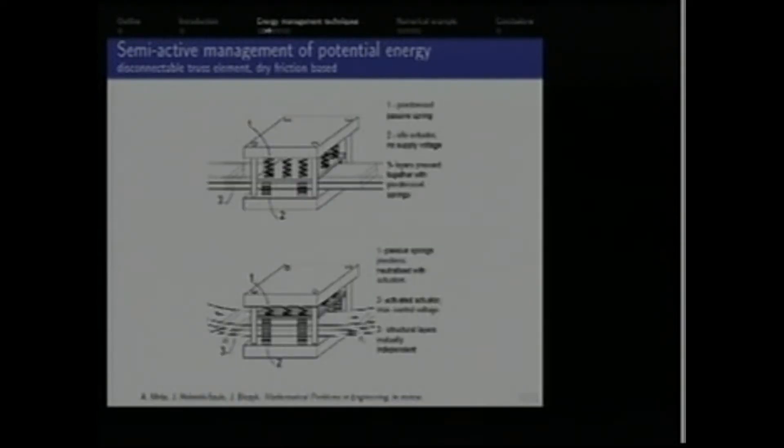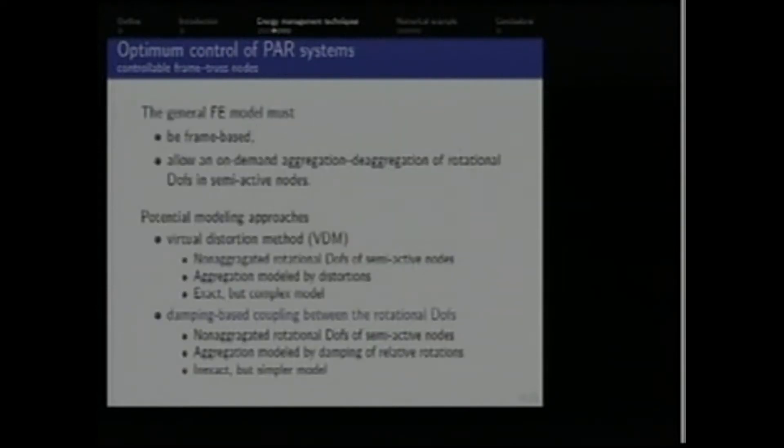We think about technological realization of such modes. Probably the first idea we come across is dry friction and system of pretensioning springs. And indeed, it's a good idea to base verification of ad-hoc strategies in commercial codes like Abaqus using this kind of system. These are figures from a paper that is just in review. But if we think about formalization of the problem and deriving certain general rules or properties of the optimum control, we need a model that is as simple as possible. So we have decided to start with a two-dimensional frame model, in which the semi-active nodes are capable of on-demand aggregation and de-aggregation of the rotational degrees of freedom. Aggregated state corresponds to the frame node, de-aggregated state corresponds to the truss mode of operation.